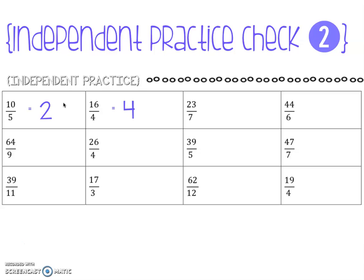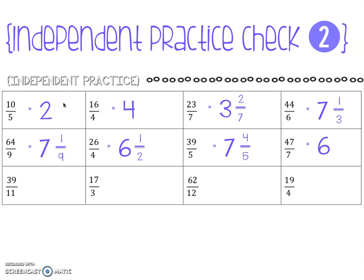23 sevenths is going to be three and two sevenths. 44 sixths is going to be seven and one third. 64 ninths is going to be seven and one ninth. 26 fourths is going to be six and one half. 39 fifths will be seven and four fifths.